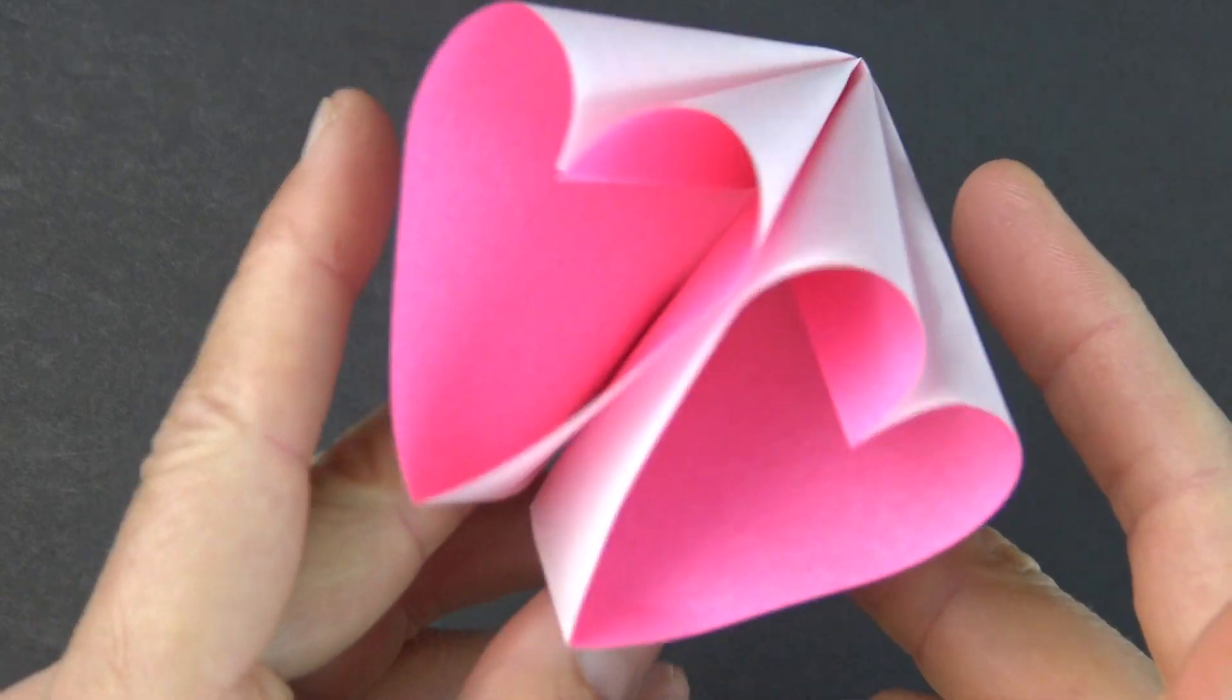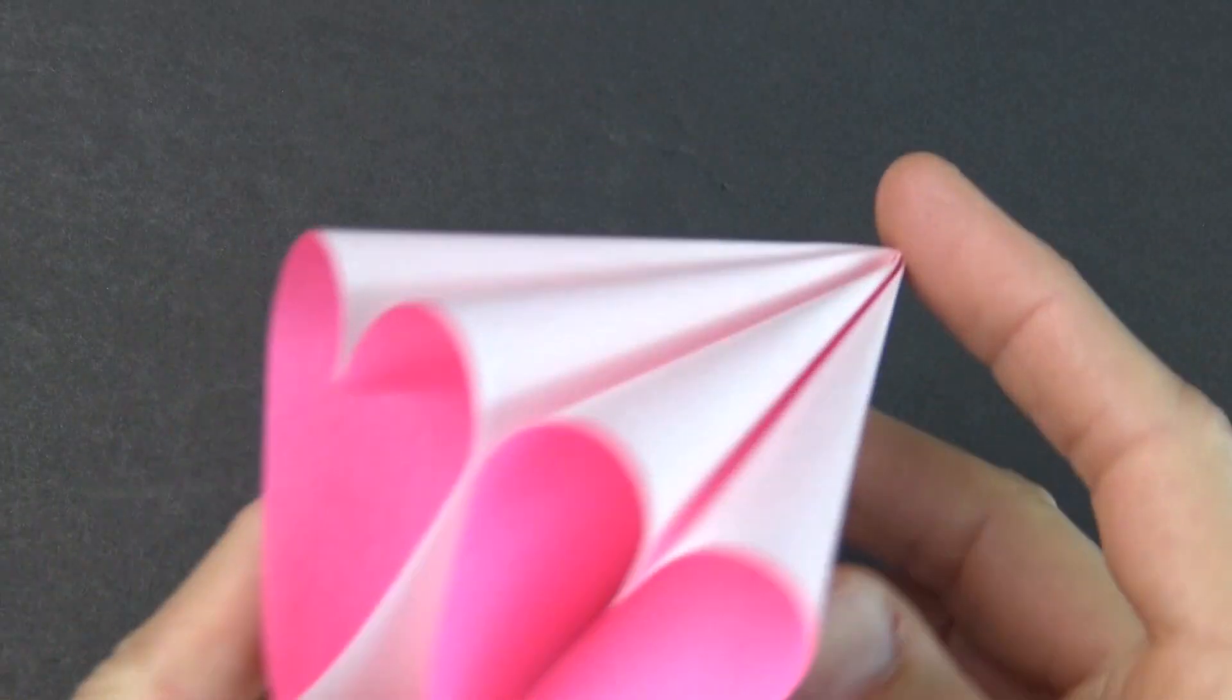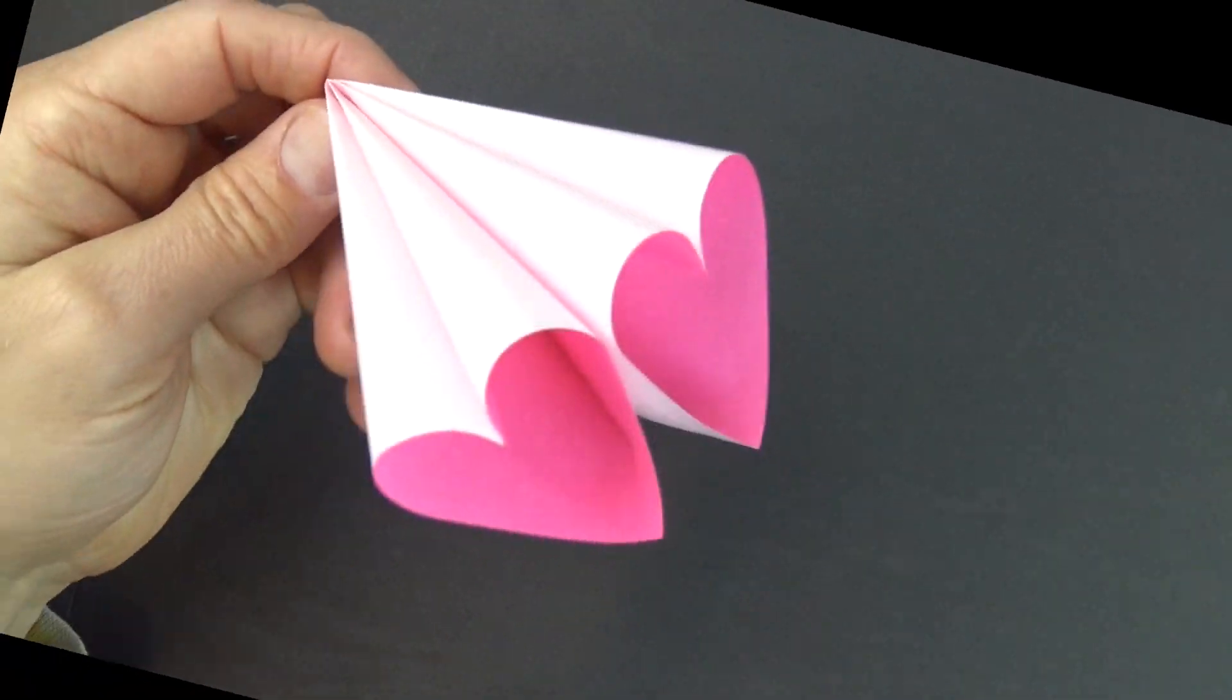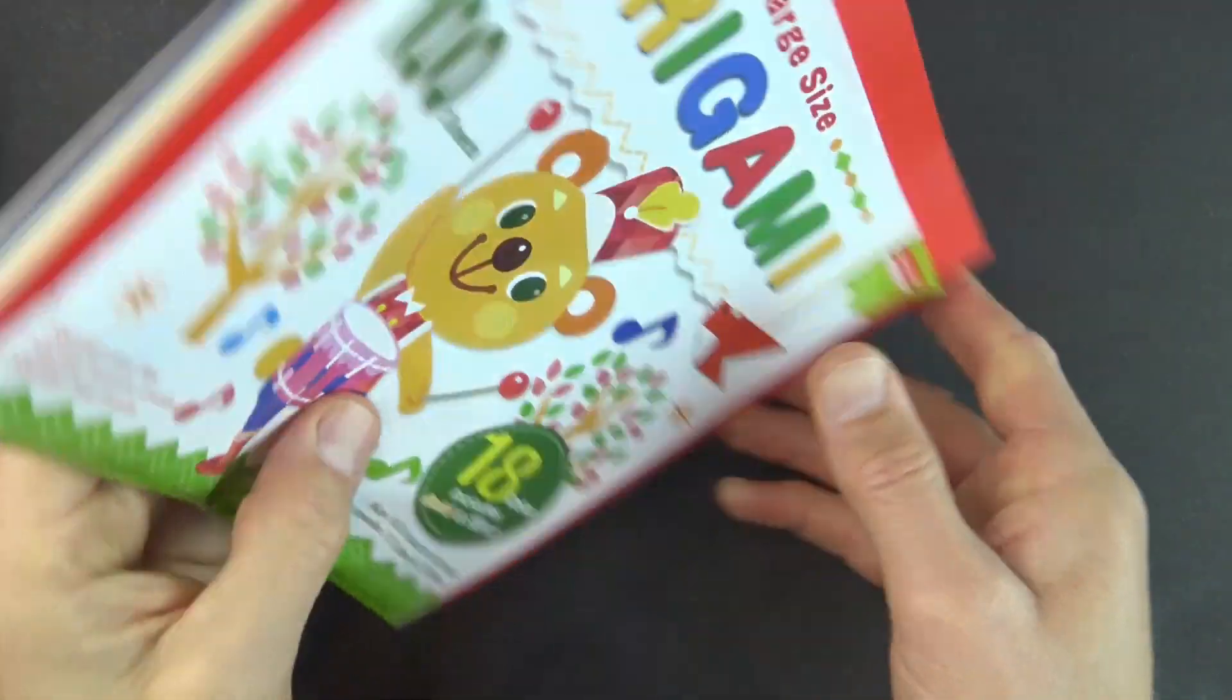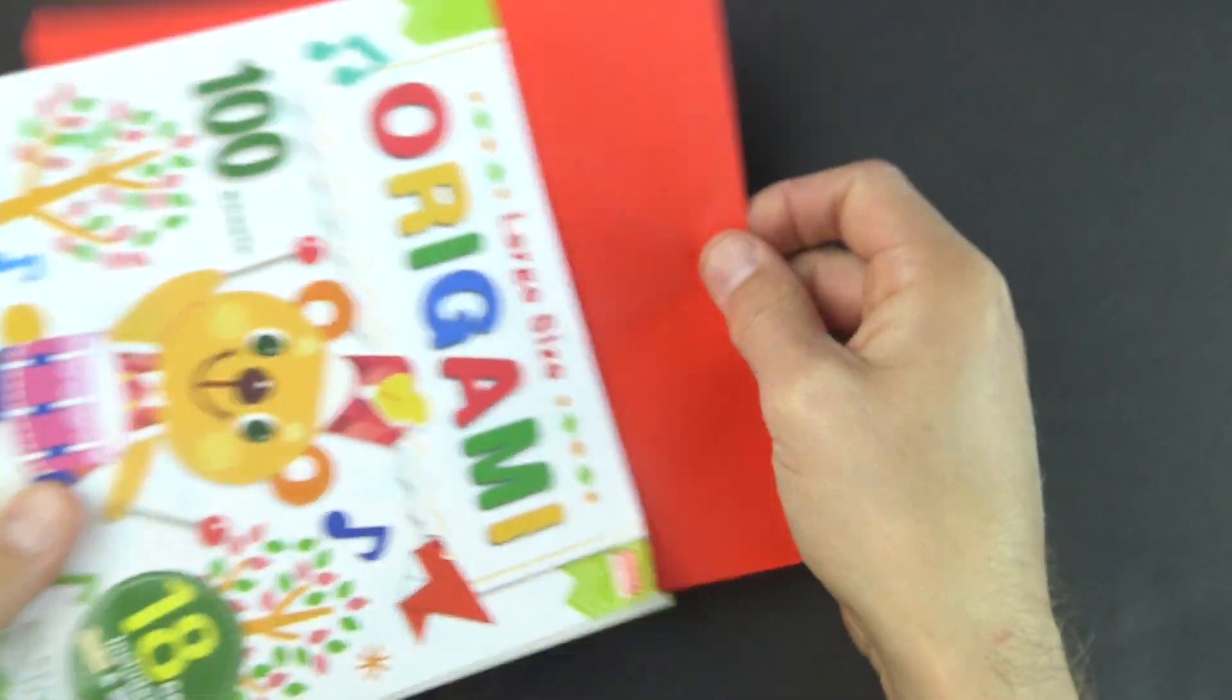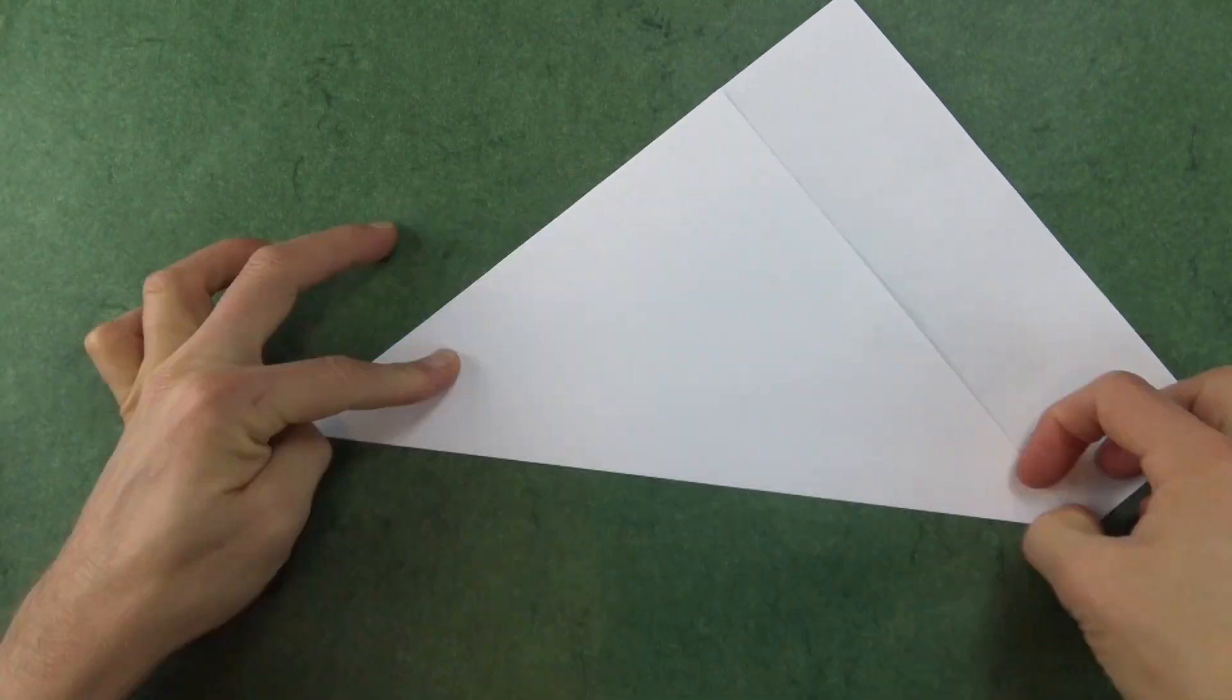It's two hearts zooming through space. Ready, set, here goes. Alright, so for this model I'm going to use a 7 inch square of Daiso Kami, but you could use a sheet of printer paper cut squared.